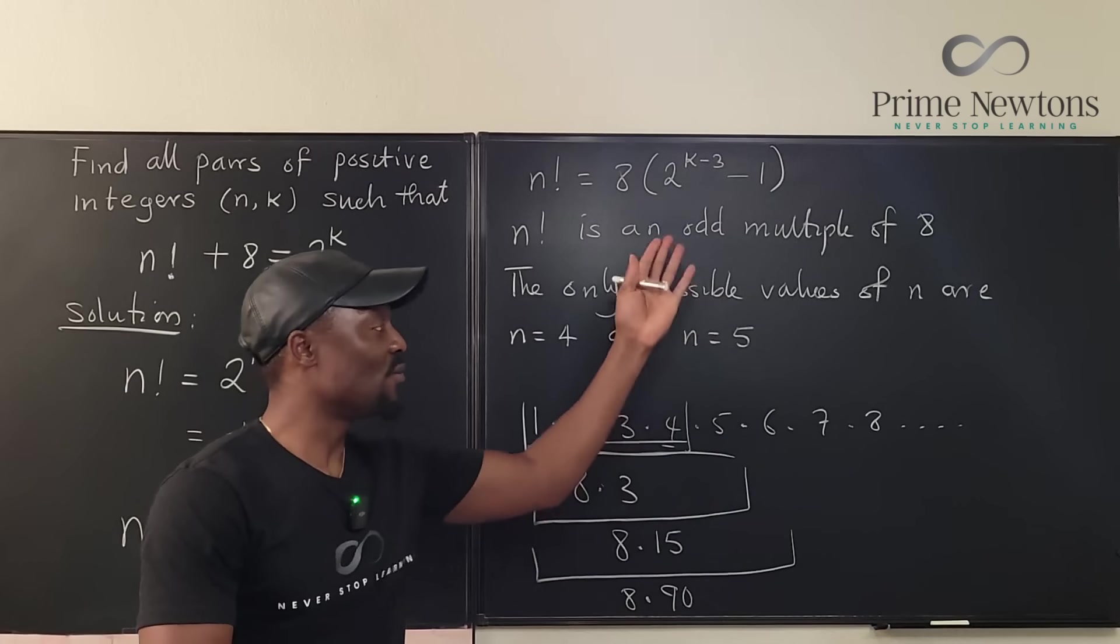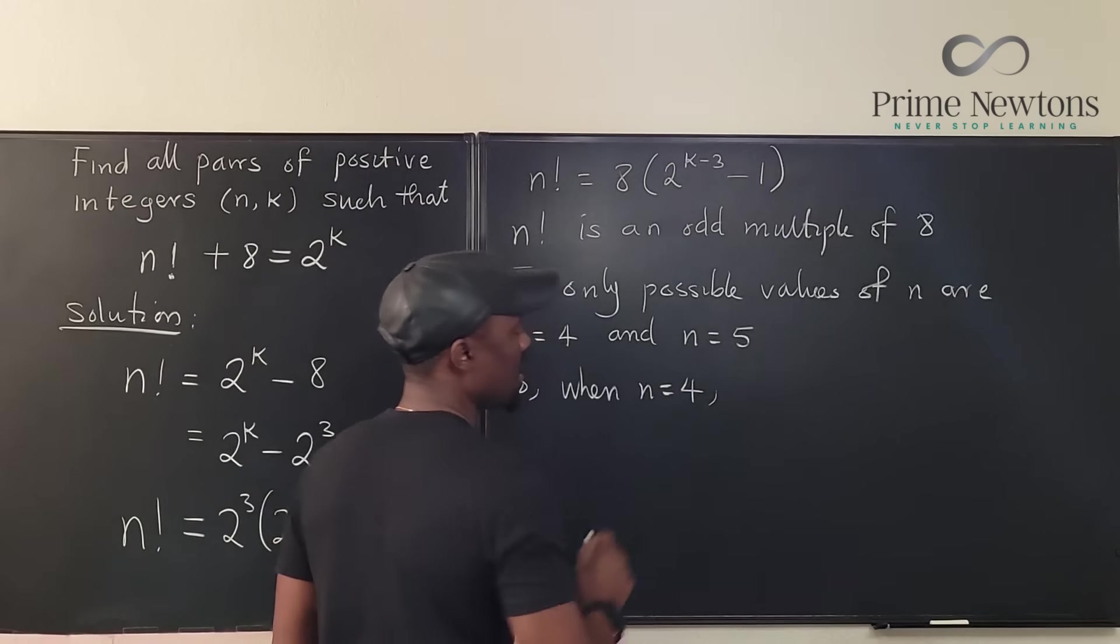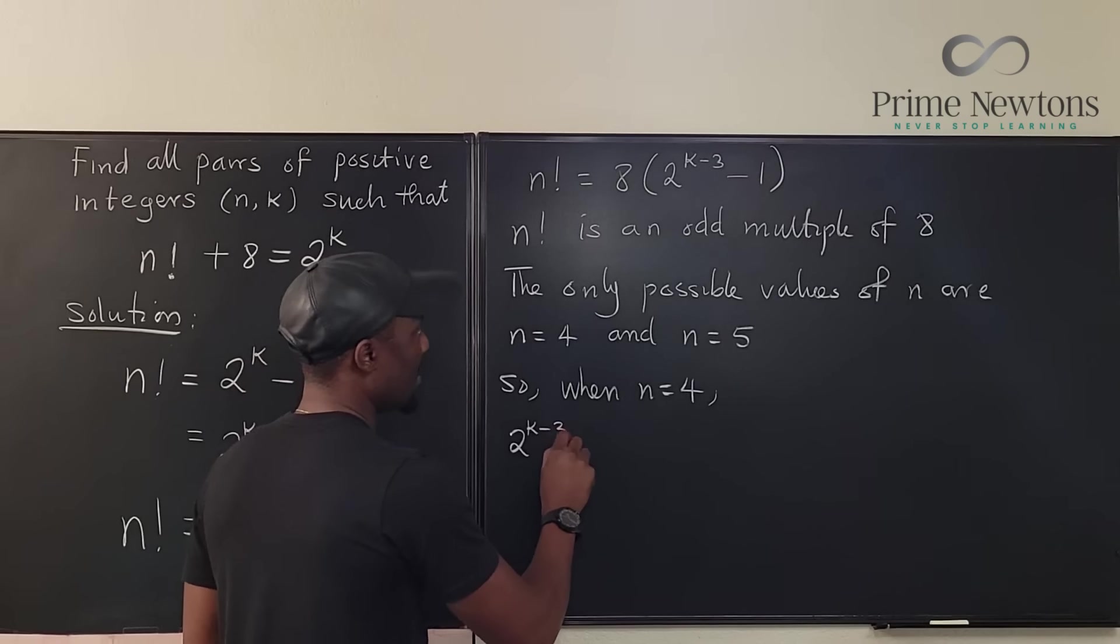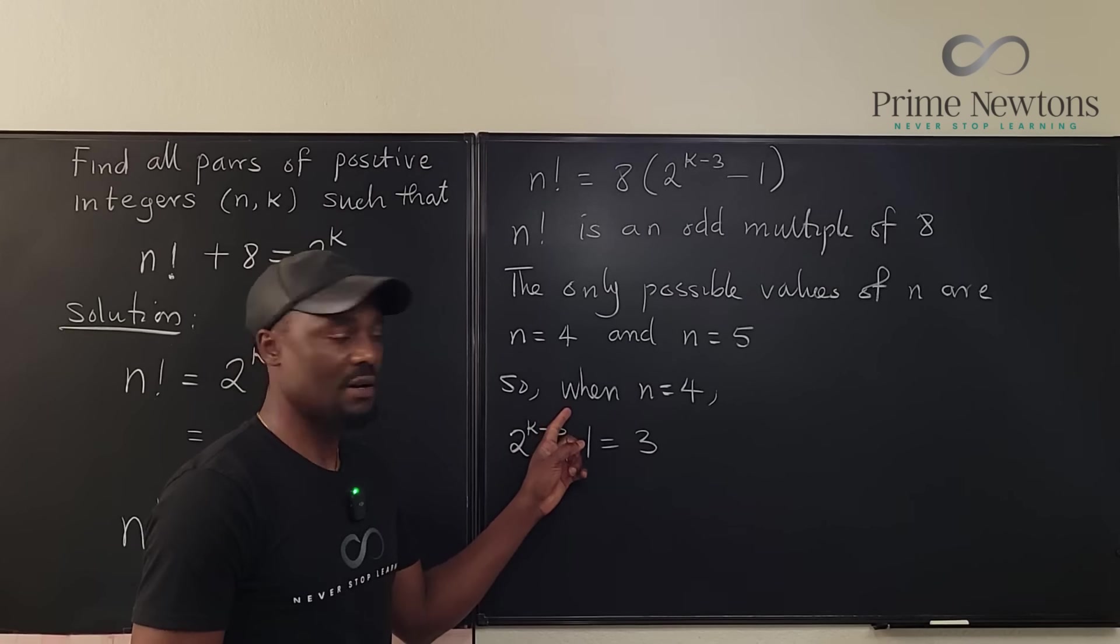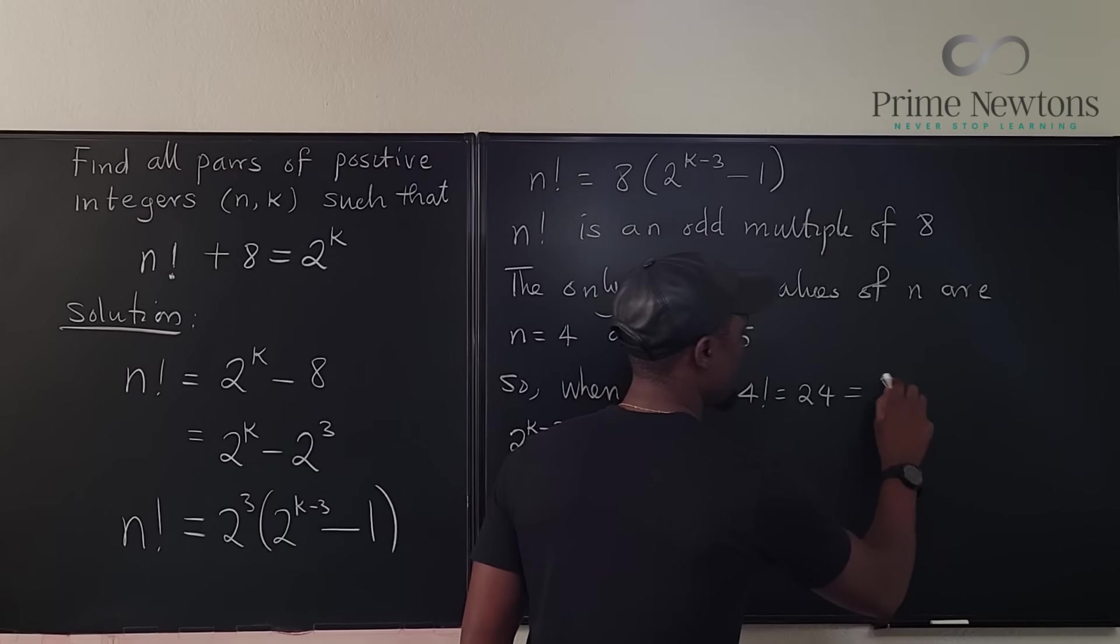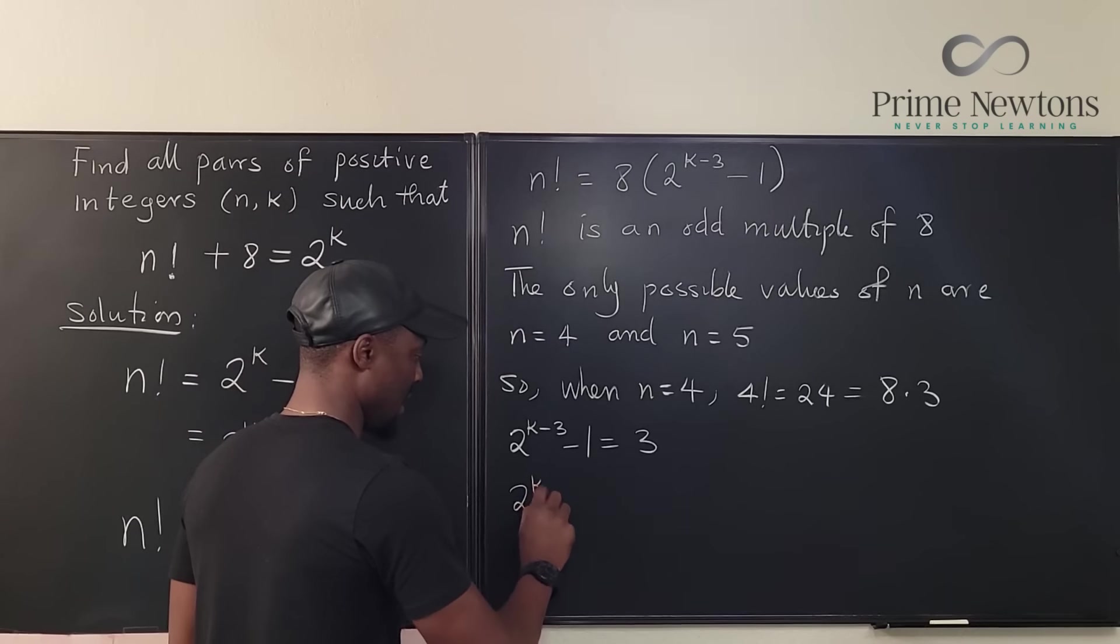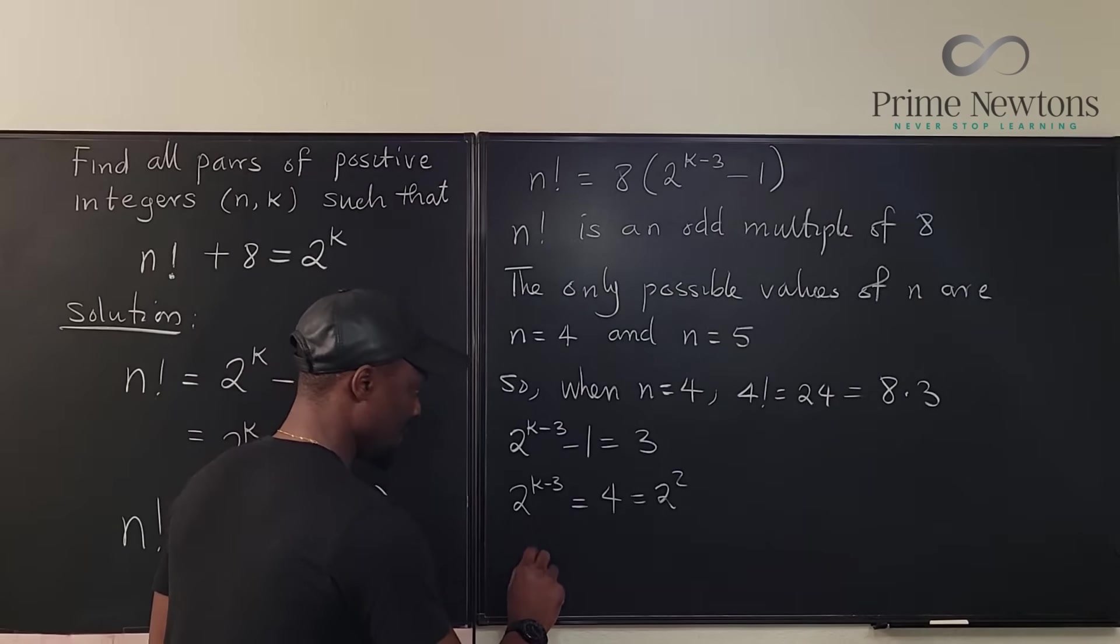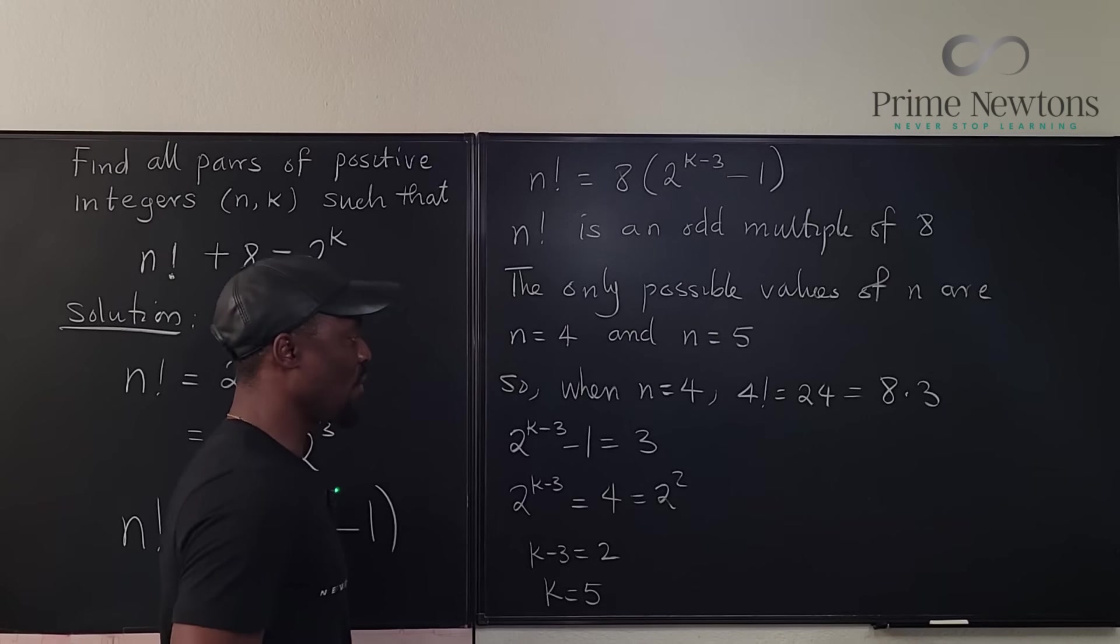So we got our n's. Let's find what k is going to be. When n equals 4, what do we get? We get 2 to the k minus 3 minus 1 will be equal to 3. Remember, it was 8 times 3, because 4 factorial when n equals 4, 4 factorial equals 24, which is equal to 8 times 3. So it means this is the 3 portion. If you solve this, you get 2 to the k minus 3 equals 4, which is equal to 2 squared, which means that k minus 3 equals 2, which implies k is equal to 5.